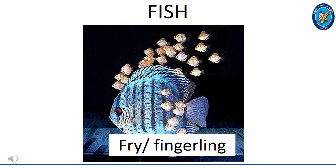This is a fish. The young one of a fish is called a fry or a fingerling. How many fingerlings can we count on the screen? Let's count together: one, two, three, four, five, six, seven, eight, nine, ten, eleven, twelve, thirteen, fourteen, fifteen, sixteen, seventeen, eighteen, nineteen, twenty, twenty-one, twenty-two, twenty-three, twenty-four, twenty-five, twenty-six, twenty-seven, twenty-eight, twenty-nine fingerlings on the screen. Amazing!